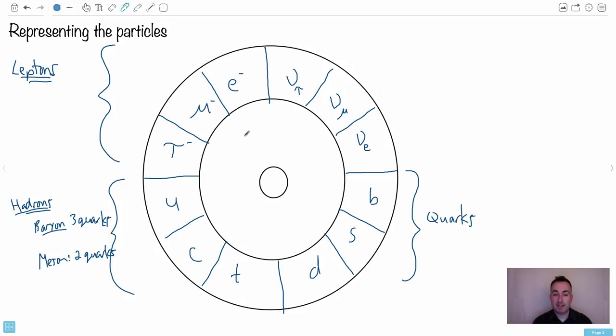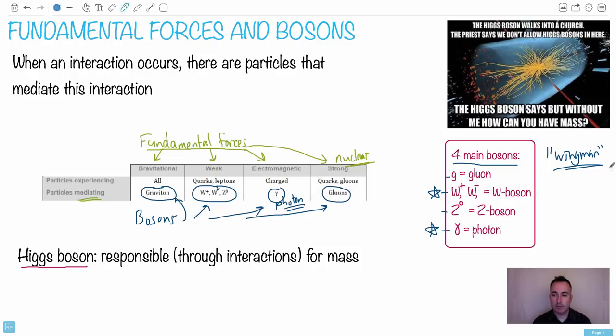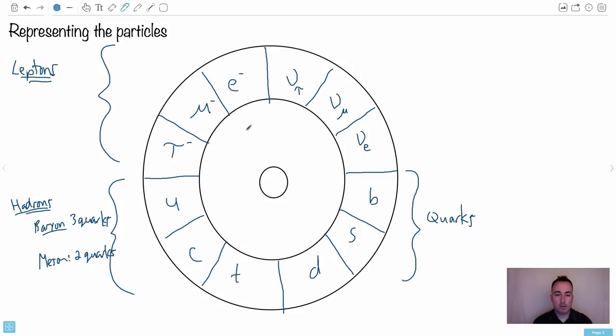What I want to do now is put in these fundamental bosons here. These main ones are here that we're going to use. So we'll talk about the gluon, which you write as a G. We could have the W plus, the W minus, the Z, and also the photon. These are the main ones here.